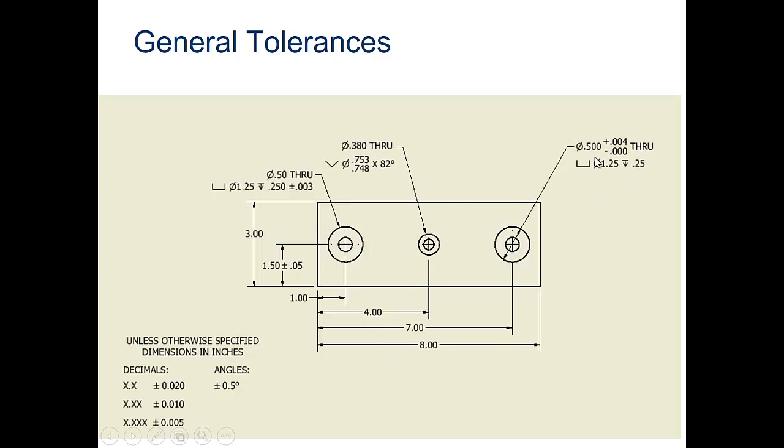For example here, we see a unilateral tolerance, then a bilateral plus or minus .05 for this 1.5 on that hole, then another bilateral plus or minus .003 on that hole, and then a limit with .753 and .748. Any other dimension, for example this 1.00, if it's not called out for tolerance, we would default down to the sheet tolerances. Since it has two decimal places, that tolerance is going to be defaulted to plus or minus .010.